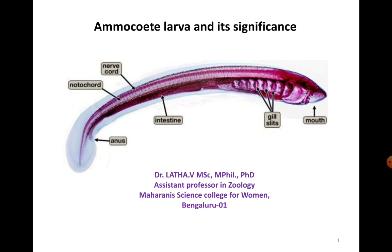Ammocoetes is a larva of Petromyzon, and in Petromyzon the sexes are separate. Differentiation of gonads takes place quite late, and in Ammocoetes larvae there is a hermaphroditic gonad which contains both oocytes and spermatocytes. At sexual maturity, a single large gonad fills most of the abdominal cavity and there is no genital duct. The mature eggs or sperm escape from the gonad into the coelom and pass through the genital pores into the urino-genital sinus, leaving the body through the urino-genital opening into the surrounding water.